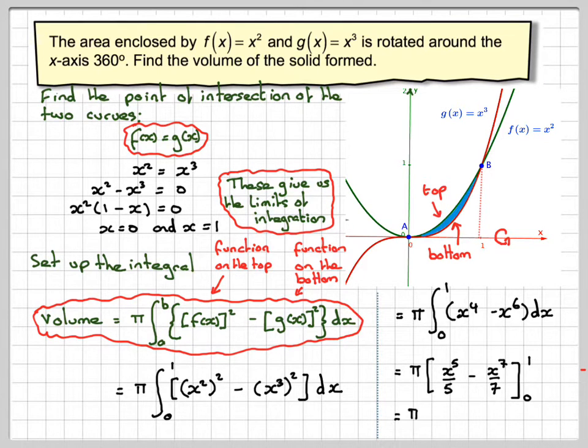Substituting in the limits, we're going to have π times one to the five divided by five minus one to the seven divided by seven, minus zero to the five divided by five minus zero to the seven divided by seven. But this should be minus all of it, so it should be in brackets as well.